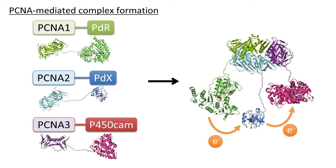We constructed genetic fusion proteins of PDR, PDX, and P450cam with the PCNA subunits: PCNA1-PDR, PCNA2-PDX, and PCNA3-P450cam. The three fusion proteins self-assemble into a heterotrimeric protein complex. This complex can be used as a single enzyme and shows 50 times higher monooxygenase activity than an equimolar mixture of PDR, PDX, and P450cam.